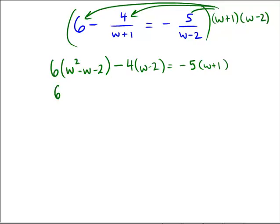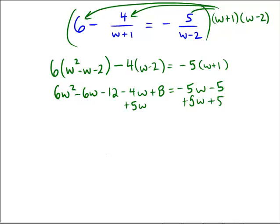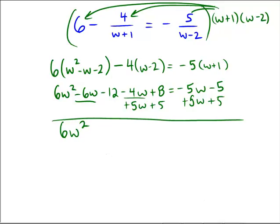So: 6w squared minus 6w minus 12, minus 4w plus 8, equals negative 5w minus 5. Adding 5w to both sides: we get 6w squared, then negative 6 minus 4 plus 5 is negative 5 for the w term, and negative 12 plus 8 plus 5 is positive 1. So the equation simplifies to 6w squared minus 5w plus 1 equals 0. Oh wait — does that one work out nicely? Yes, it does!